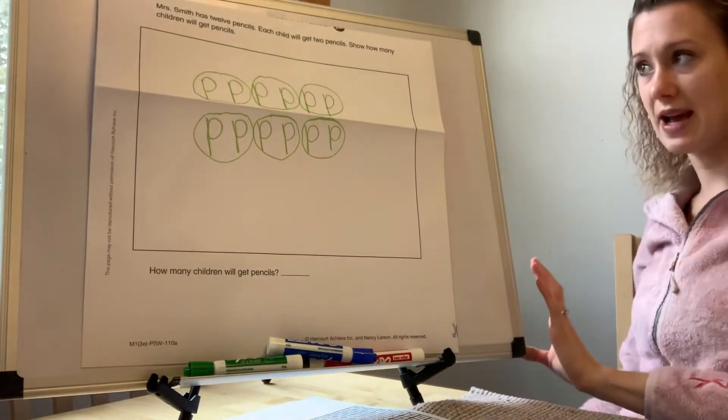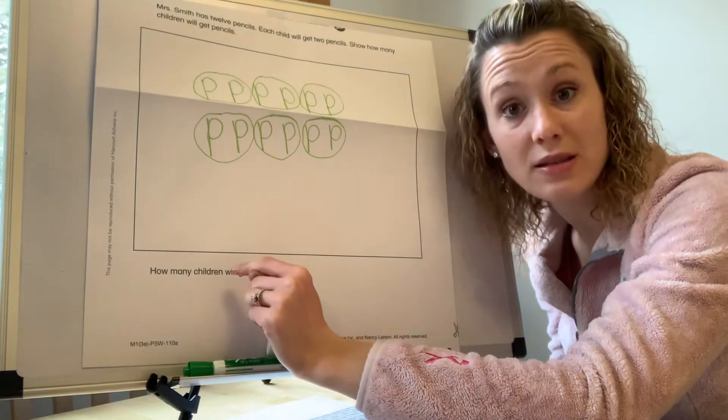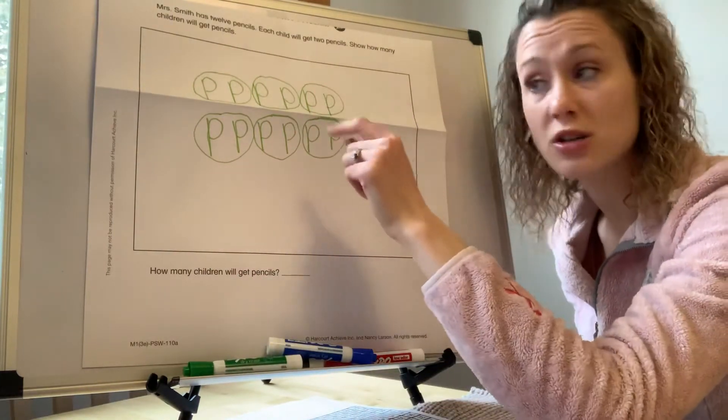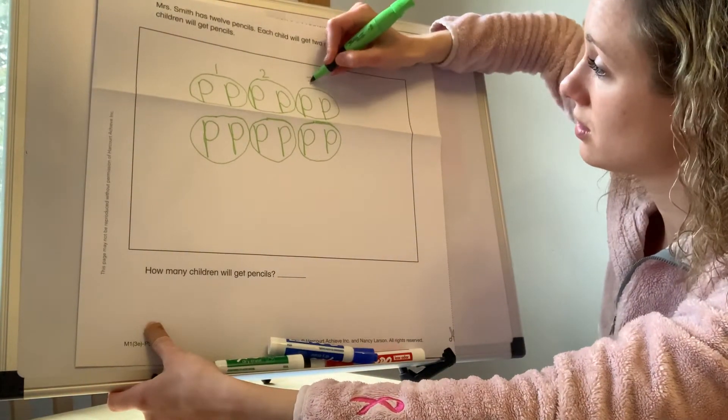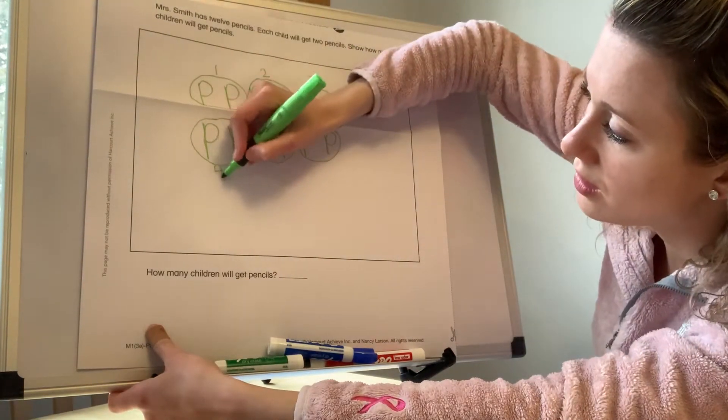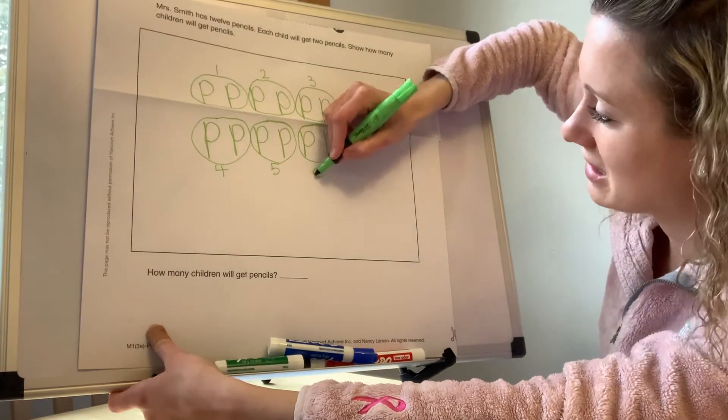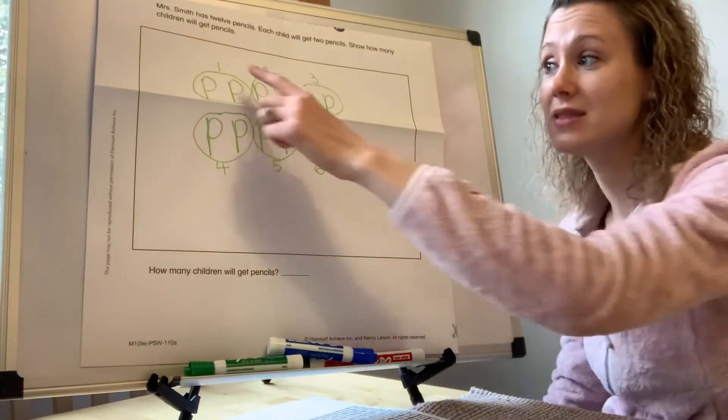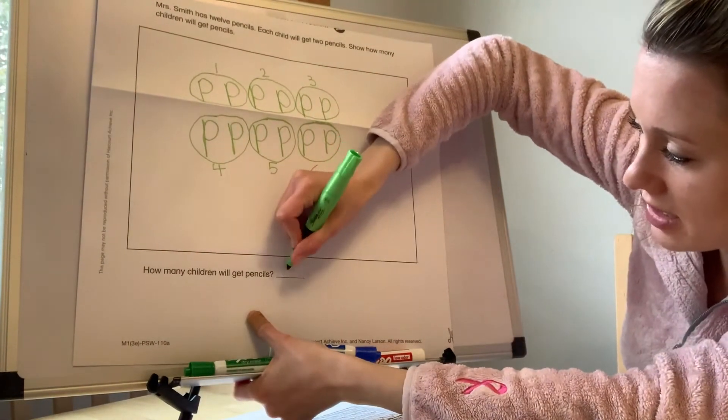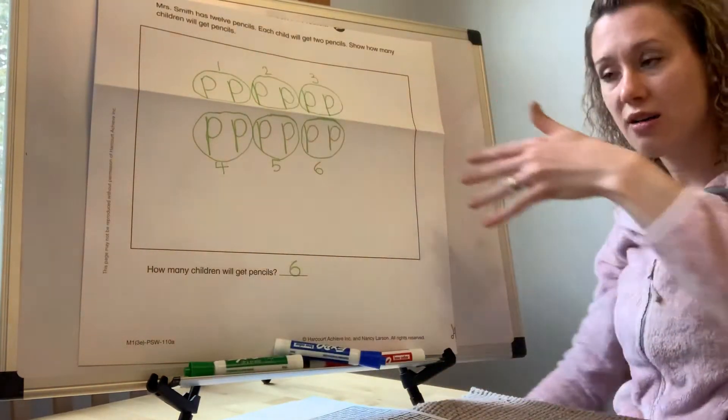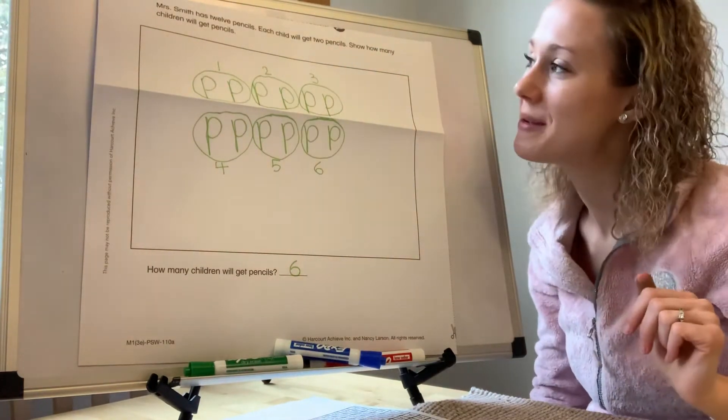So then it says, down here at the bottom, how many children will get pencils? Well, if each one gets 2, we just count our circles. So here's 1 child, here's 2 children, 3 children, 4 children, 5 children, and 6 children. So how many children will get pencils? 1, 2, 3, 4, 5, 6. So we need to write a 6 down here at the bottom because if there are 12 pencils and everybody gets 2, that means 6 children will get 2 pencils. Awesome.